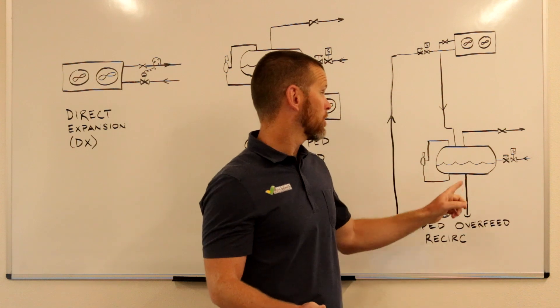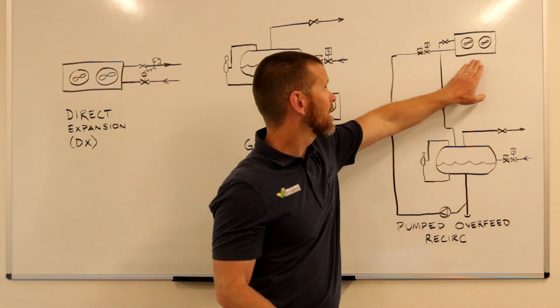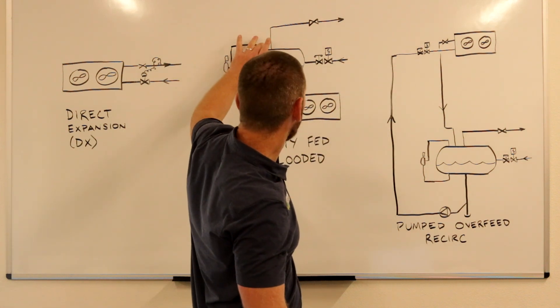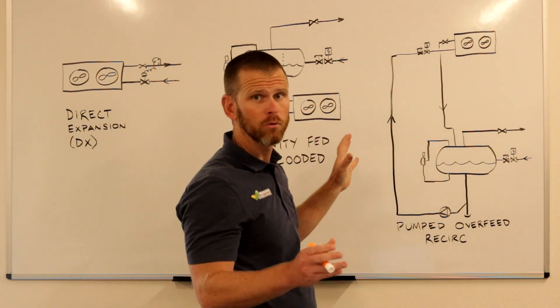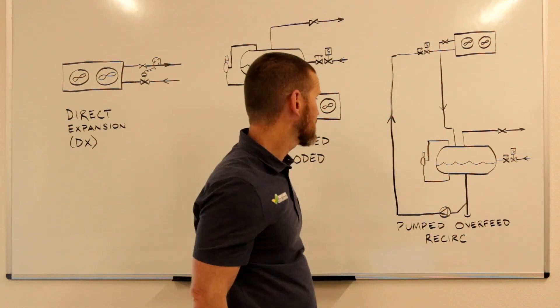The other advantage of this is you can have one recirculator vessel that could feed many, many evaporators. So you don't have to have a whole bunch of surge drums like you might have to in a flooded system. So those are two advantages of this system.